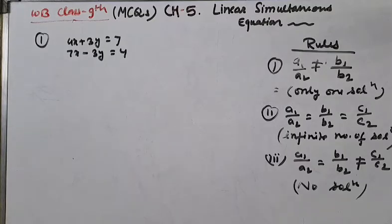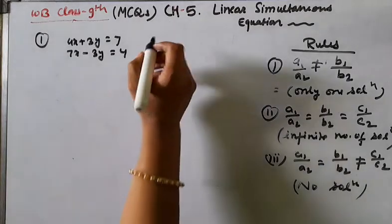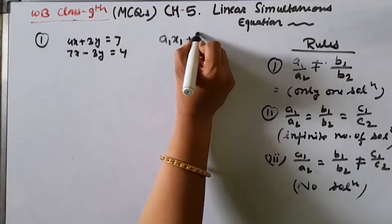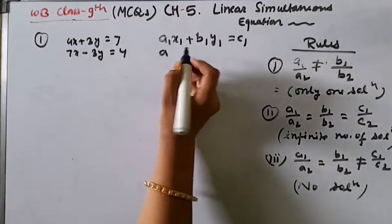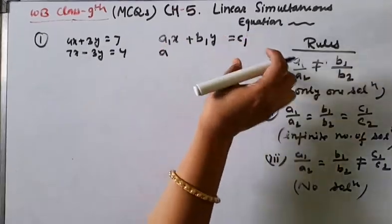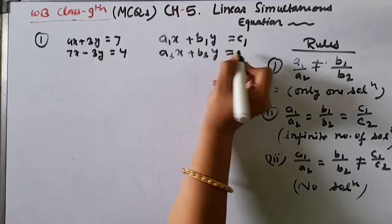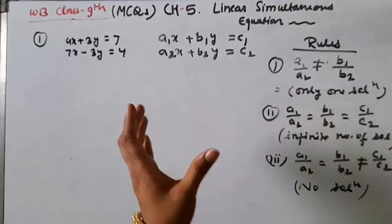If you followed my previous videos on this chapter related to linear simultaneous equations, I had already told you this rule, and now I am going to explain the rules again. What is the rule? What is the equation in this standard form: a1x plus b1y equals c1, and a2x plus b2y equals c2?